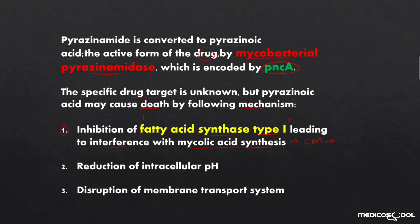Pyrazinoic acid can also cause death of Mycobacterium tuberculosis by reduction of the intracellular pH, making it a more acidic and unfavorable environment. It can also cause death by disruption of the membrane transport system, so the bacteria cannot transport the essential nutrients required for its survival.